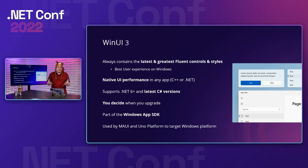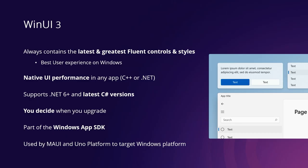WinUI 3 is about having the latest and greatest Fluent controls and styles. Fluent is the design language of Windows 11, so any component you pull from the platform will feel like it belongs there. That gives you native UI performance whether you're using C++ or .NET. It supports the latest .NET and C# versions. WinUI 3 is part of a NuGet package — specifically the Windows App SDK — so you can decide when to upgrade.